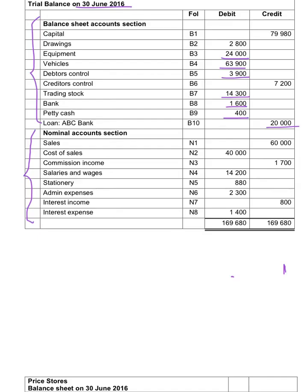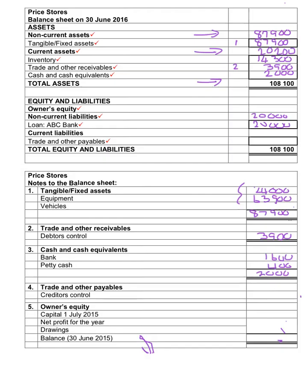The creditors control amount is $7,200. Creditors control will be recorded under trade and other payables, because it's money that we owe to other businesses that supply goods to our business on credit. That will cause an outflow of money in the future. Therefore we will show under current liabilities $7,200, and this will be note number four.